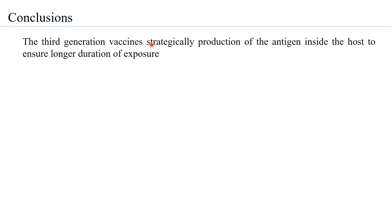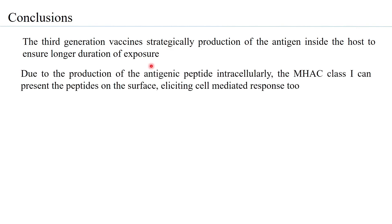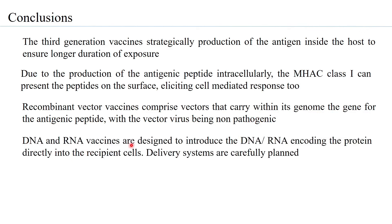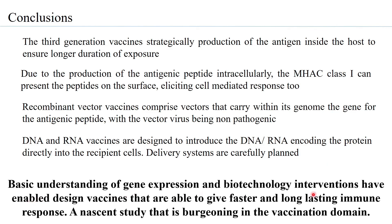In conclusion, third generation vaccines strategically lead to production of the antigen inside the host itself to ensure long duration of exposure. Due to intracellular production of the antigenic peptide, MHC class 1 can present the peptides on the surface, eliciting cell-mediated response. Recombinant vector vaccines use non-pathogenic vectors carrying the gene for the antigenic peptide. DNA and RNA vaccines introduce the encoding DNA or RNA directly into recipient cells through carefully planned delivery systems. Basic understanding of gene expression and biotechnology has enabled design of vaccines that give faster and long-lasting immune responses.